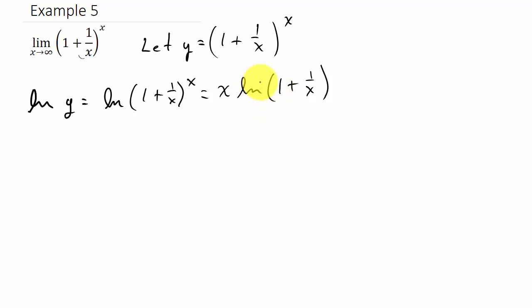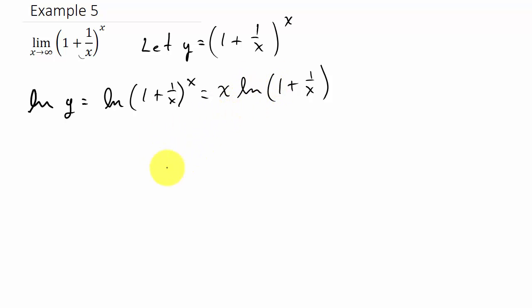Let's see what we're dealing with now. Remember, we're taking the limit as X goes to infinity. As X goes to infinity, 1 over X goes to 0, so we'd have the natural log of 1, which is 0. So we have infinity times 0, which is indeterminate. So let's rewrite this — all I'm doing is getting it into the form of 0 over 0 or infinity over infinity. I can rewrite it as the natural log of 1 plus 1 over X, all over 1 over X.